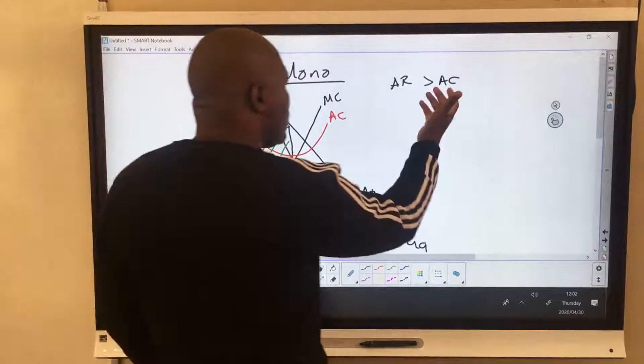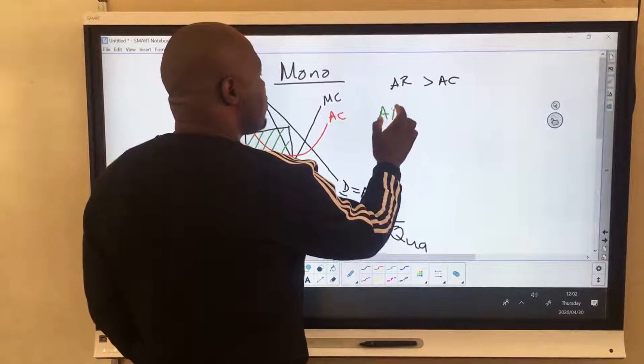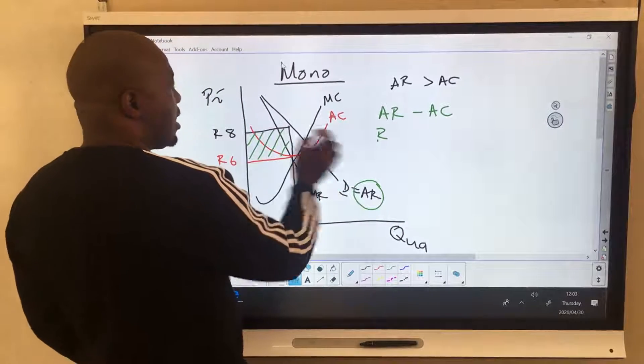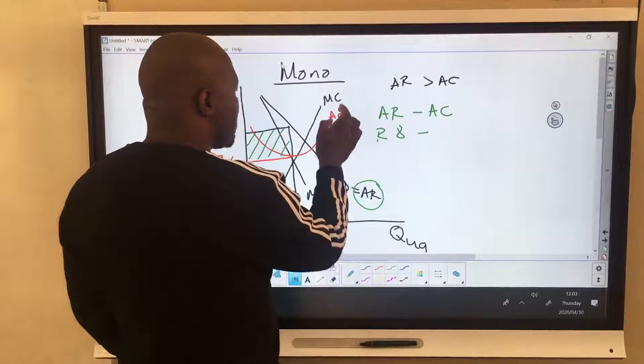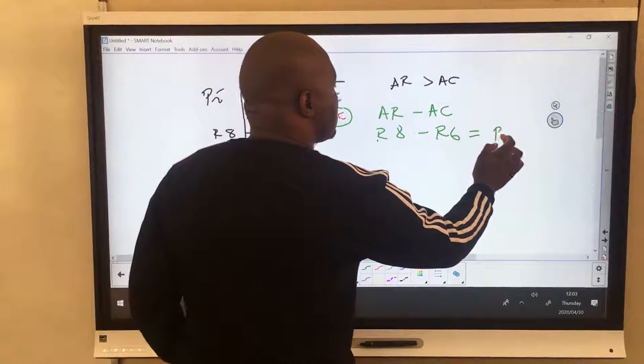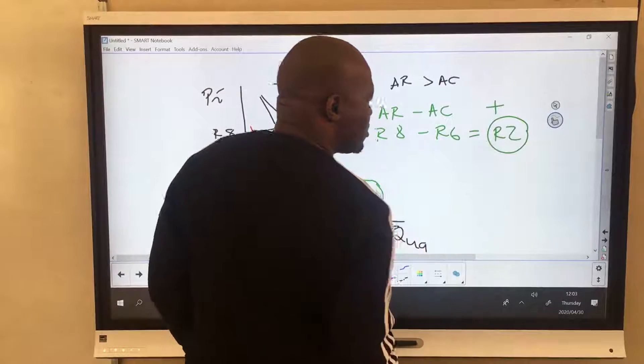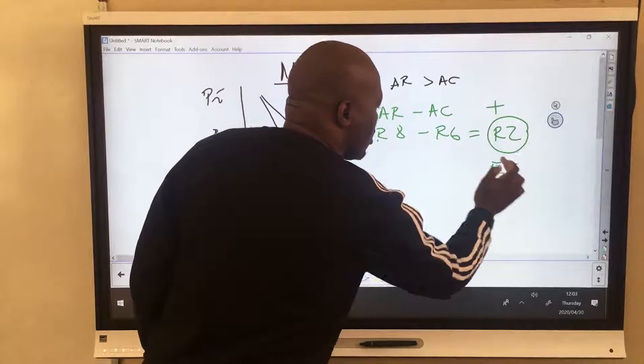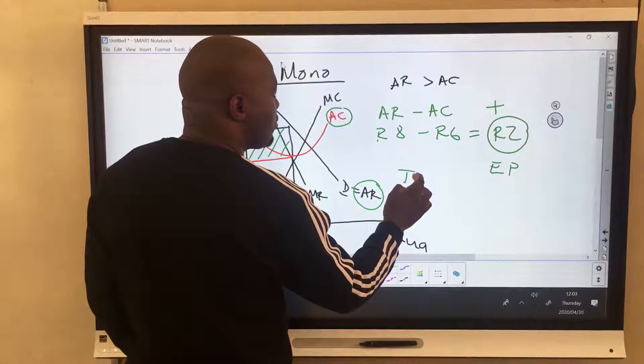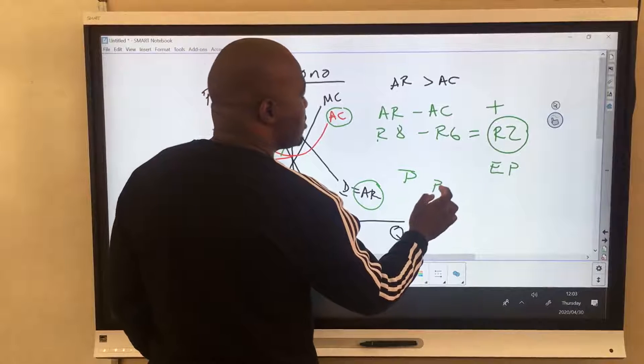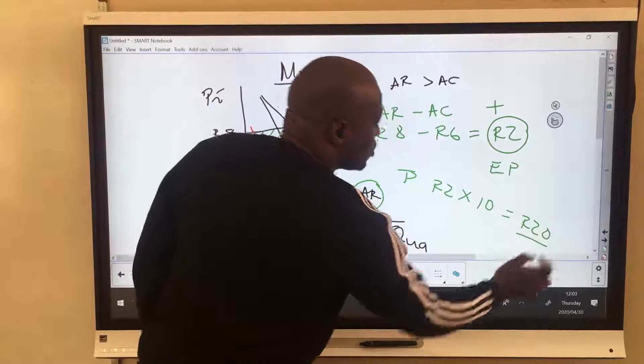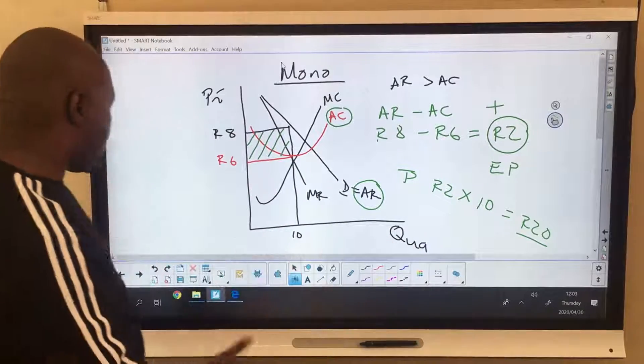Now, how can we prove that? We use the formula to get economic profit. We say AR minus AC. So what is my AR? My AR, this one here, is 8 rands. Minus, what is my AC? My AC is 6 rands. So what do I get? I get 2 rands. Remember, I said this number is positive. So whenever you get a positive figure, it's economic profit. So what is economic profit? Total economic profit. So to get our total profit, entire profit, we will say 2 rands times our quantity, which is 10, which is 20. So 20 rands is our total economic profit that the firm is making.